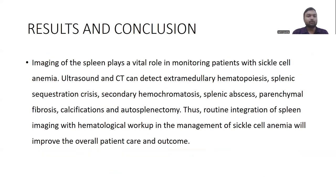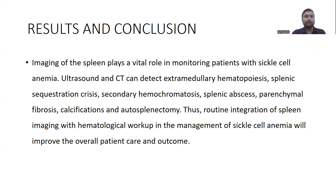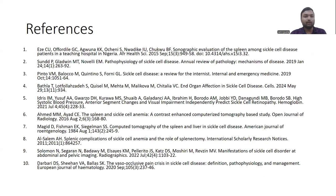Coming to results and conclusion, imaging of the spleen plays a vital role in monitoring patients with sickle cell anemia. Ultrasound and CT imaging can detect extramedullary hematopoiesis, splenic sequestration crisis, secondary hemochromatosis, splenic abscess, parenchymal fibrosis, calcifications, and autosplenectomy. Thus, routine integration of spleen imaging with hematological workup in the management of sickle cell anemia will improve overall patient care and outcomes.